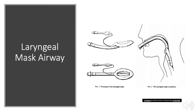LMAs, or laryngeal mask airways, are designed to be inserted without using a laryngoscope or visualization device. These devices are inserted blindly. By design, once inserted, these devices will seat around the larynx and direct the incoming breaths anteriorly toward the trachea.